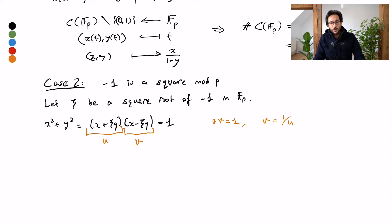Just to clarify, observe that x is going to be u plus v divided by two, and y is going to be u minus v divided by 2ψ. That means that if I find how many solutions there are to u times v equals one, then I can find how many solutions there are for my equation x squared plus y squared equals one.